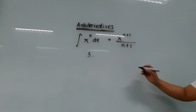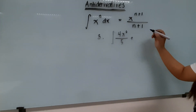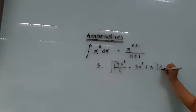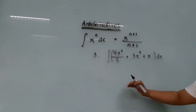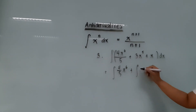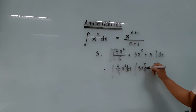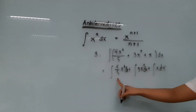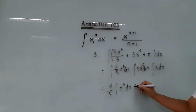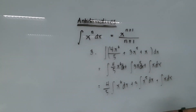Next example: the integral of 4x raised to 6 over 5, plus 3x raised to 5, plus x, quantity dx. To get the integral, we separate it term by term. This becomes the integral of 4 over 5 times x raised to 6, plus the integral of 3x raised to 5, plus the integral of x — each with dx. Then bring all constants outside their respective integral signs.